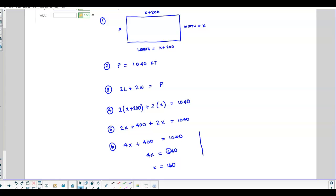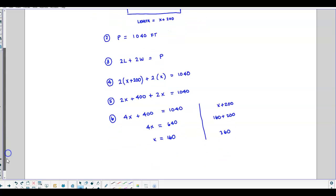And then we also need to find out what the length is. The length is x + 200. So that's 160 + 200, which is equal to 360. So we can say that the width is 160 feet and the length is 360 feet.